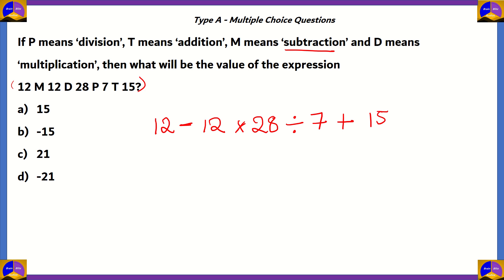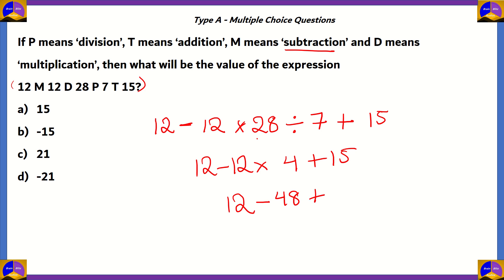Based on the BODMAS rule of operations, we first do division: 28 divided by 7 equals 4. So the expression becomes 12 − 12 × 4 + 15. Then multiplication: 12 × 4 = 48. So we have 12 − 48 + 15. Adding the positive terms: 12 + 15 = 27, then 27 − 48 = negative 21. Option D, negative 21, is the correct answer.